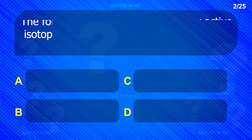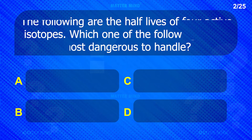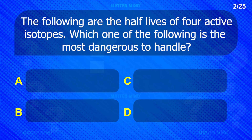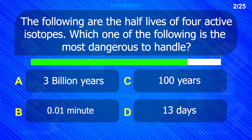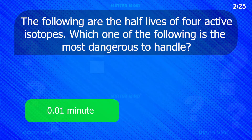The following are the half-lives of 4 radioactive isotopes. Which one of the following is the most dangerous to handle? Answer: 0.1 minute.